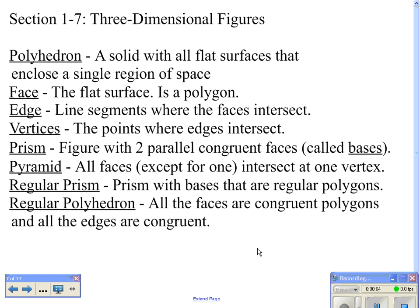In three-dimensional figures, a polyhedron is a solid with all flat surfaces that enclose a single region of space. The faces are the flat surfaces around our polyhedrons or three-dimensional figures. These will be polyhedrons. An edge is a line segment where these faces intersect. Vertices are the corners or the points where the edges intersect.